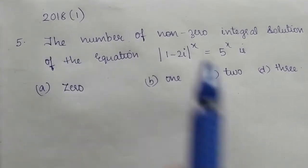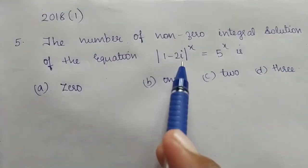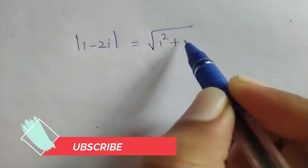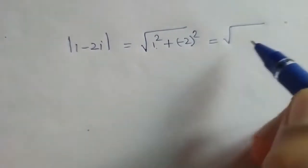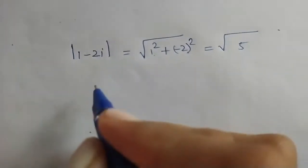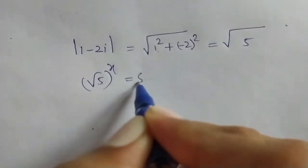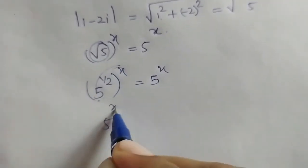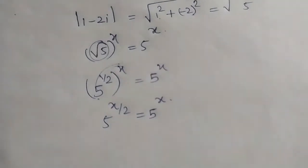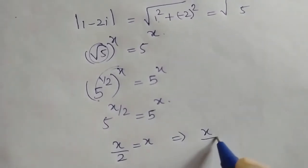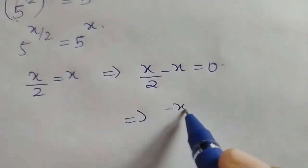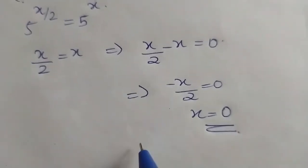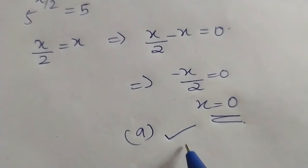Next question: find the number of non-zero integral solutions of the equation. We compute modulus of 1 minus 2i, which equals root of 1 squared plus minus 2 squared, giving root of 5. Substituting, root of 5 raised to x equals 5 raised to x. Writing root of 5 as 5 raised to 1 by 2, we get 5 raised to x over 2 equals 5 raised to x. Equating powers: x by 2 equals x, so minus x by 2 equals 0, meaning x equals 0. The number of non-zero integral solutions is 0. Option A is the right answer.